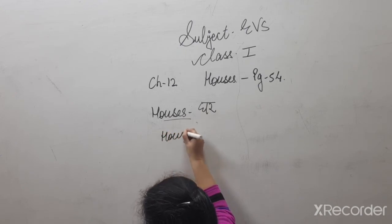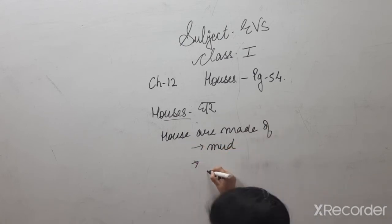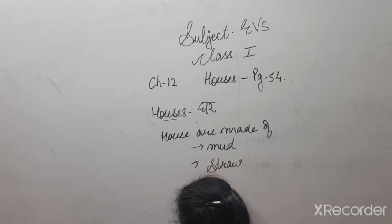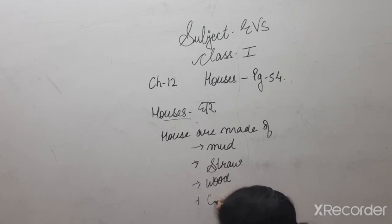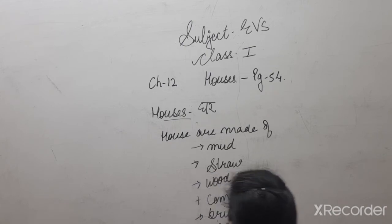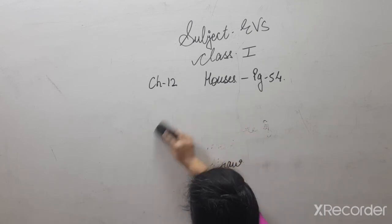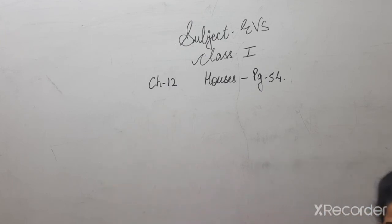Houses are made of, kis-kis se banta hai? Mud se, mitti ka. Straw se. Wood se, lakdi ka. Cement se. Bricks se, eint. Iron se, or steel se. These are different materials jis se ghar banaya jata hai. For example, jaise agar aap ko koi sabji banani hai mamma ne, toh us me material ingredients padte hai. Like that only, a house can be made of mud, straw, wood, brick, cement, iron, or steel.